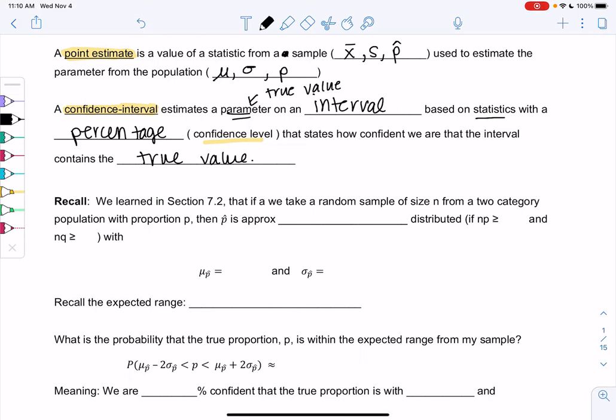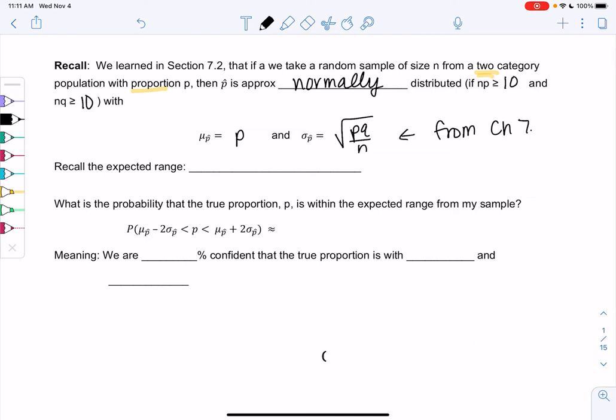Before we can get started, we're going to need that normal curve again. So back in 7.2, we learned that if we take a random sample of size n from a two-category population with a proportion, then we learned p hat is approximately normally distributed as long as np and nq are greater than or equal to 10. And we learned that the mean is equal to p and the standard deviation is the square root of pq over n. So chapter 7 was all about when are we allowed to use that normal curve. Now we need to use that normal curve to create confidence intervals.